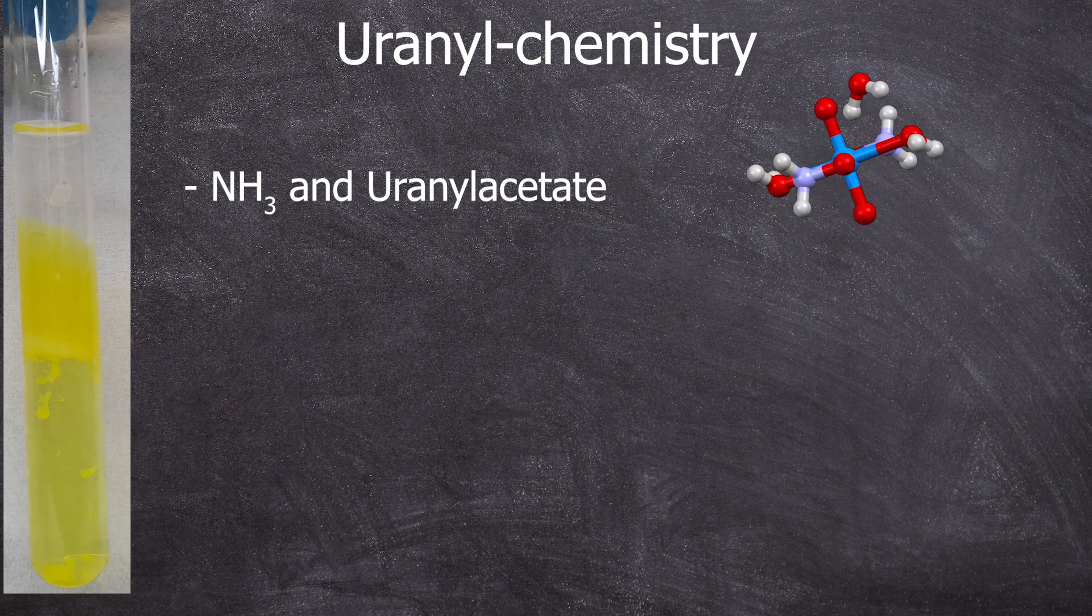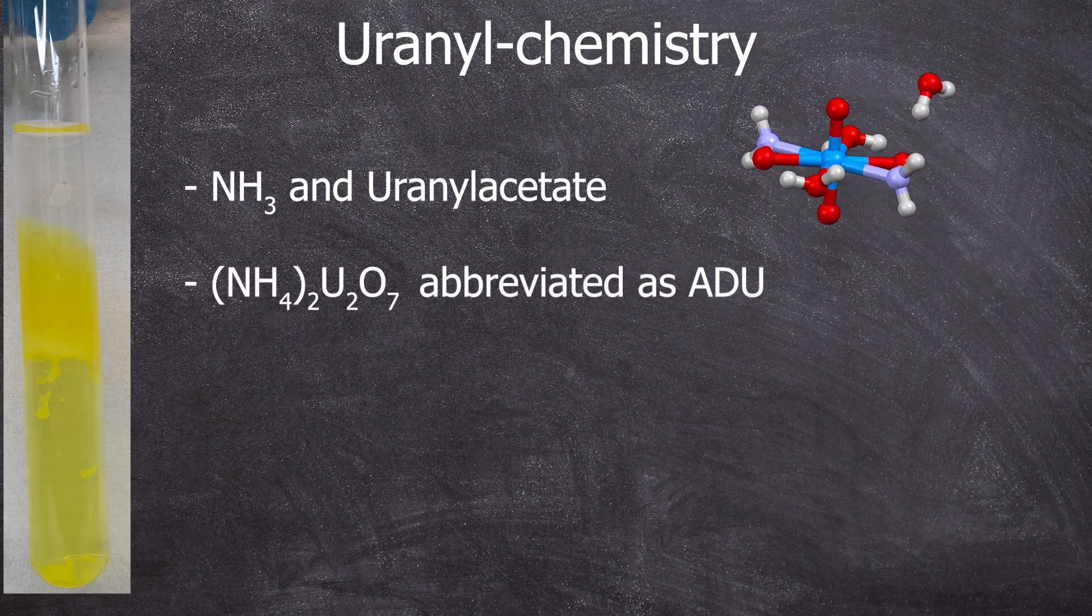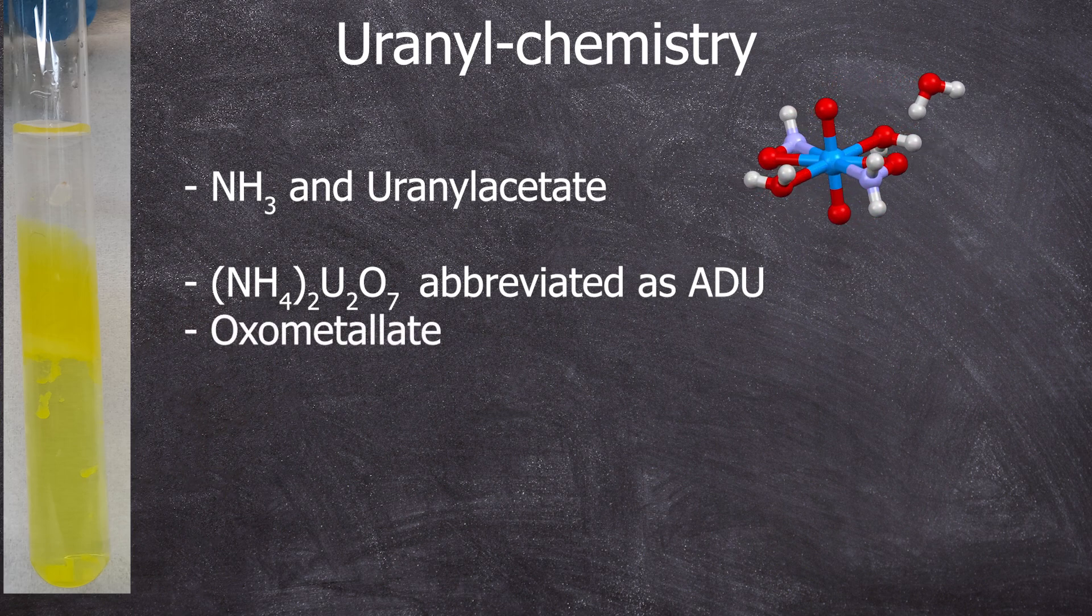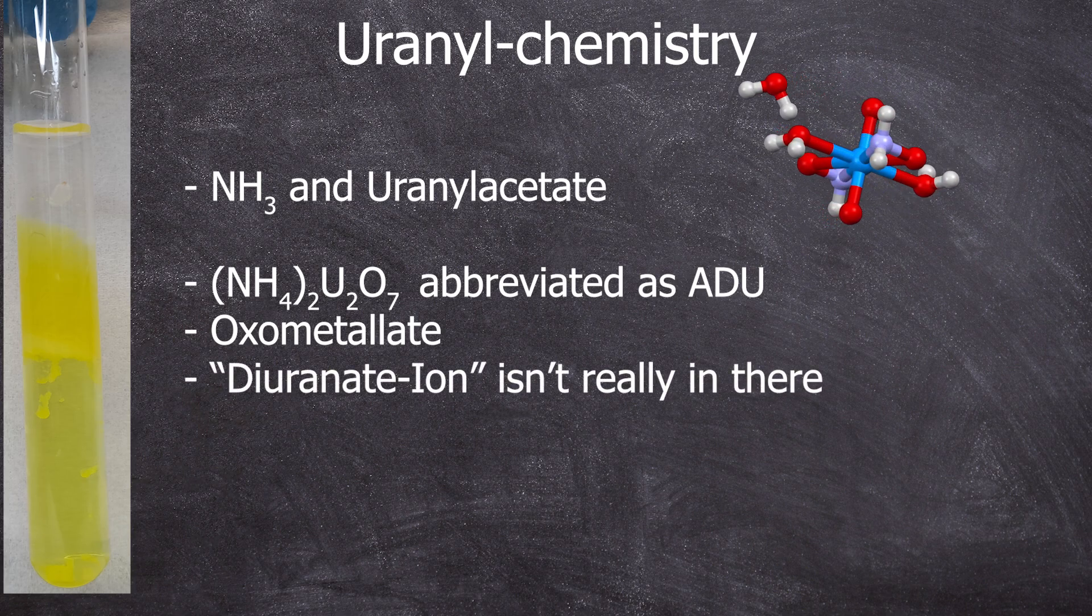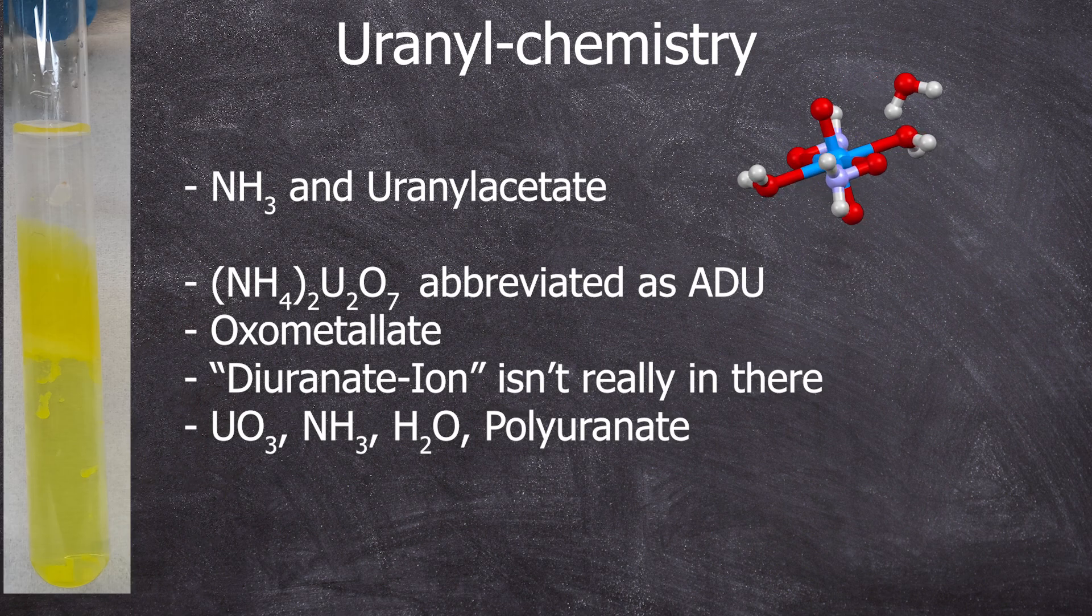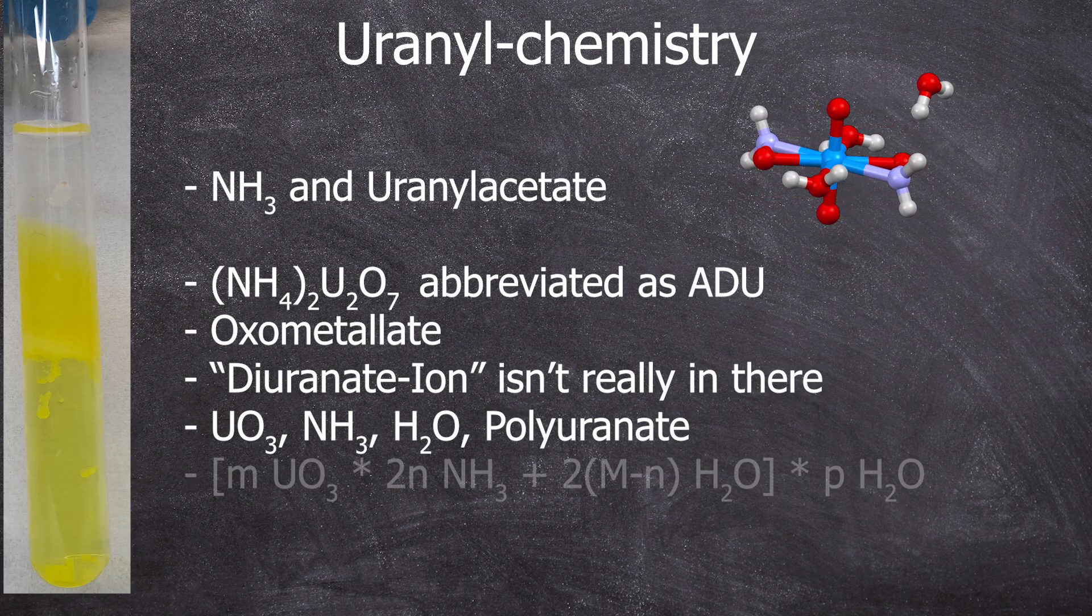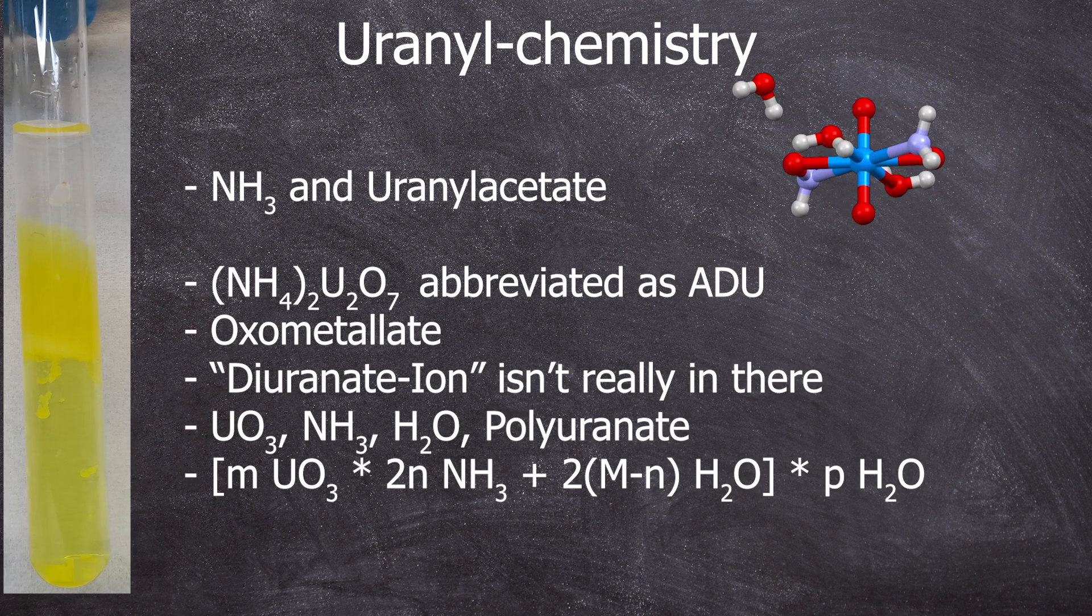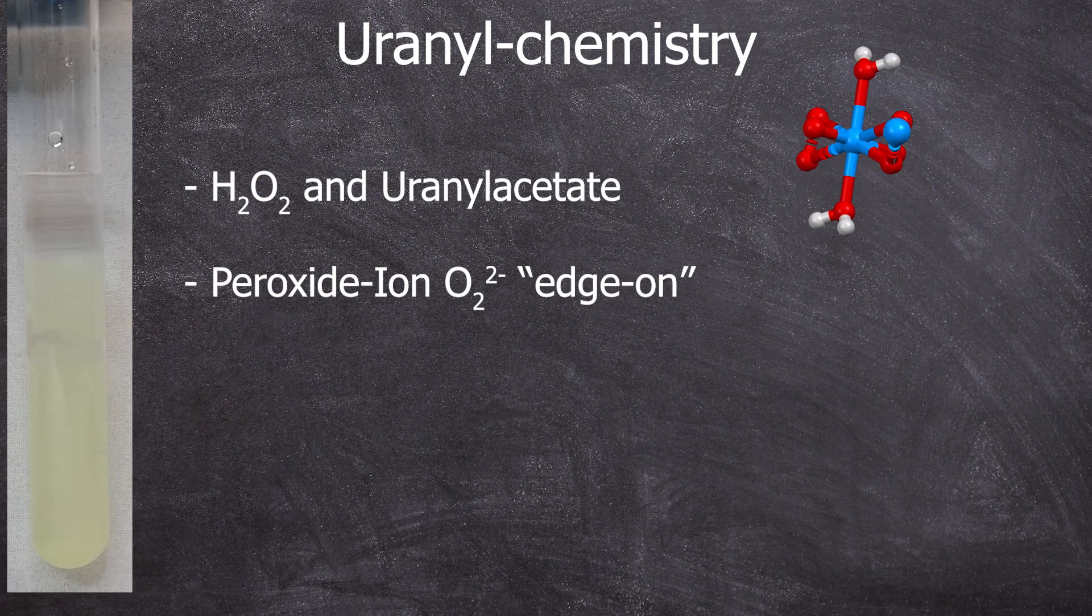It's often abbreviated as ADU, standing for ammonium diuranate. The molecular formula quite well describes that you have uranium oxygen chains. This makes it an oxometallate, but in ammonium and sodium diuranate, there is no diuranate ion. It's a mixture of uranium trioxide, water and ammonium and other polyuranates. That's why you sometimes see this general formula to distance itself from an actual diuranate ion, which isn't contained in the sodium or ammonium diuranate.